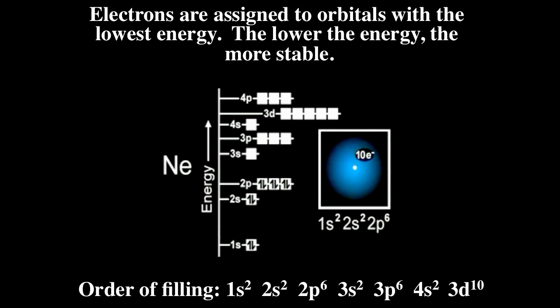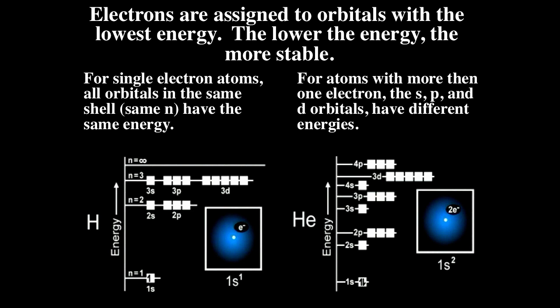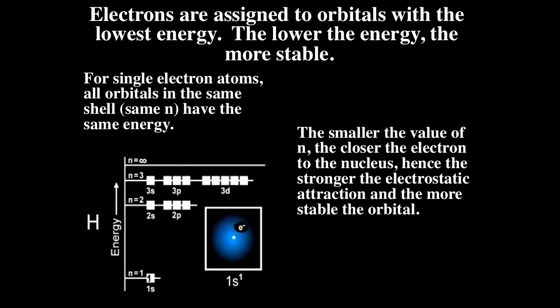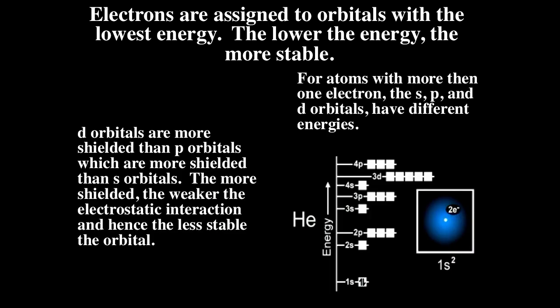Only for a single electron atom or ion does the energy of the orbitals depend only on n. Once you have more than one electron, you will have shielding and then s and p will actually be at different energies. The energy level diagram will be different for different elements. For single electron atoms, smaller n means the electron is closer to the nucleus, lower energy, more stable. For multiple electrons, s is shielded less than p, which is shielded less than d — so s is lower in energy than p than d in any given shell.